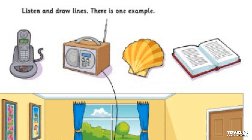Now listen to part one again. One. Put the clock between the two pictures. Pardon? Where do I put the clock? On the wall, between the two pictures. OK.